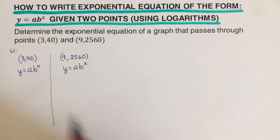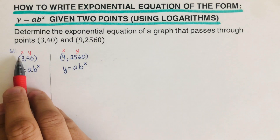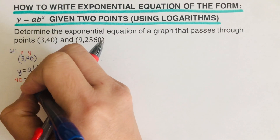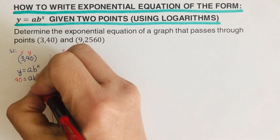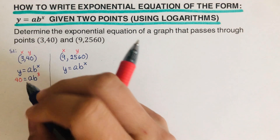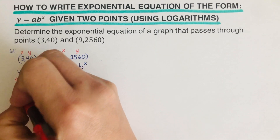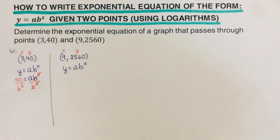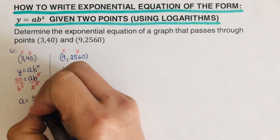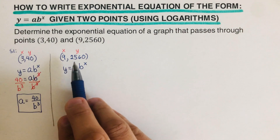In each ordered pair, the first number is x and the second is y. Plugging in the first point (3, 40): y is 40 and x is 3, so we write 40 equals a times b to the third. To isolate a, we divide both sides by b to the third, and we're left with a equals 40 over b to the third. That's our equation from the first point.